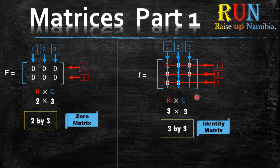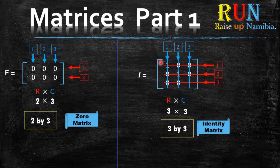Now for any matrix to be an identity matrix, there are two main properties it needs to have. Number one, it should be a square matrix — for example, this one is a three by three. And number two, it should have ones on its main diagonal, meaning there is a diagonal line of ones, and the rest of the entries should be zeros. So this one is an identity matrix, also called a unit matrix.